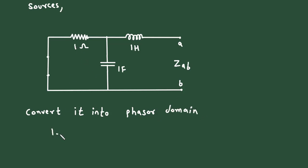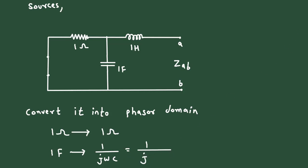Then the 1 ohm resistance will remain same. Then this 1 farad will change to 1 upon j omega C. So 1 upon j into... Now the value of omega, we can find the value of omega from here.